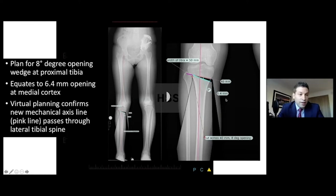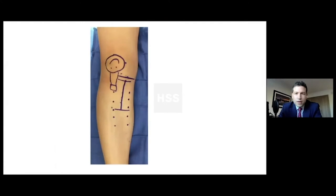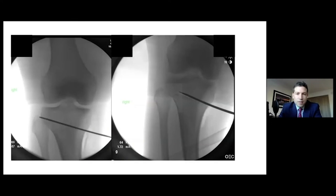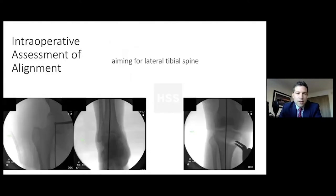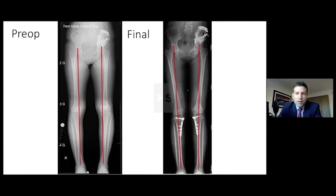Now in the OR, I'll admit I can't really open exactly 6.4 millimeters, but this is where custom cutting jigs and maybe navigation in the future can help us get accurate correction. So I do an open proximal tibia osteotomy, just aiming for the top of the fibula, putting a laminar spreader in, measuring the amount of correction, and ensuring you don't change the sagittal alignment. Then I still check that my mechanical axis is aiming for the lateral tibial spine, and then secure it with a locking plate to make sure it holds the deformity.